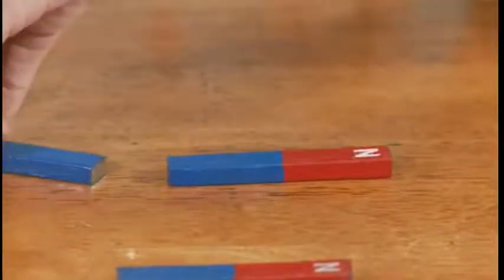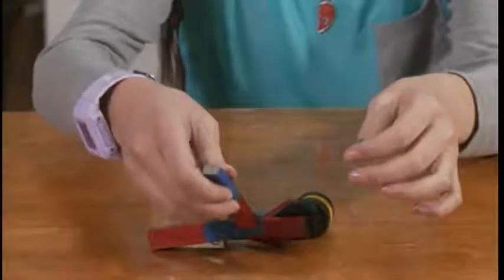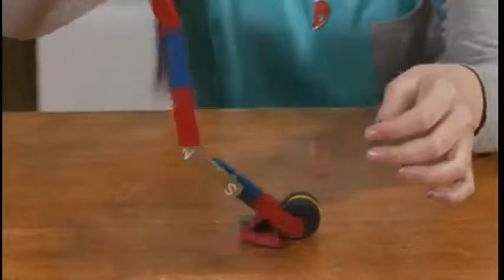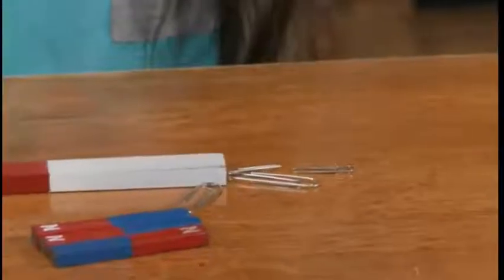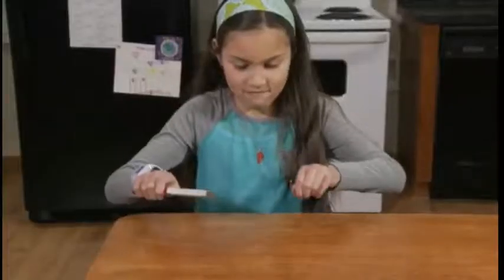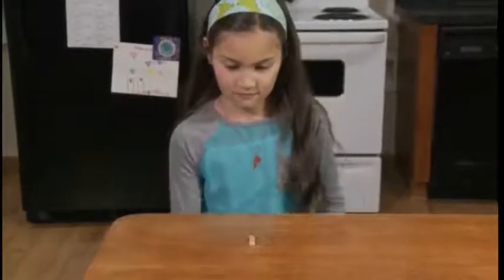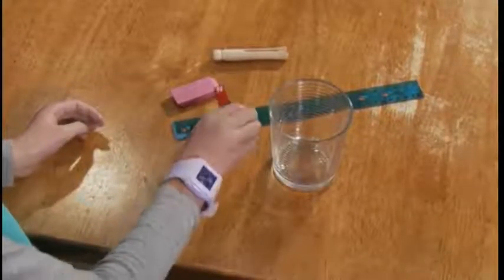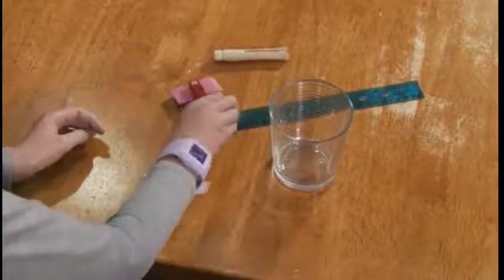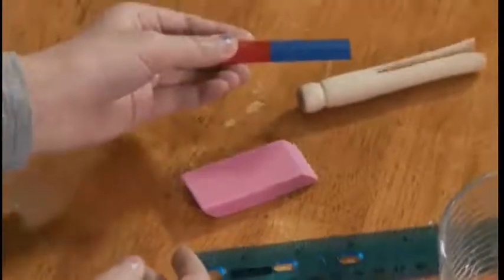The force that causes this to happen is called magnetic force. A magnet is any object with a magnetic force. Magnets can also attract things that are made of certain metals like iron. Magnets can even attract or repel objects through solids, liquids and gases. Magnets cannot attract things made of wood, glass, plastic or rubber.